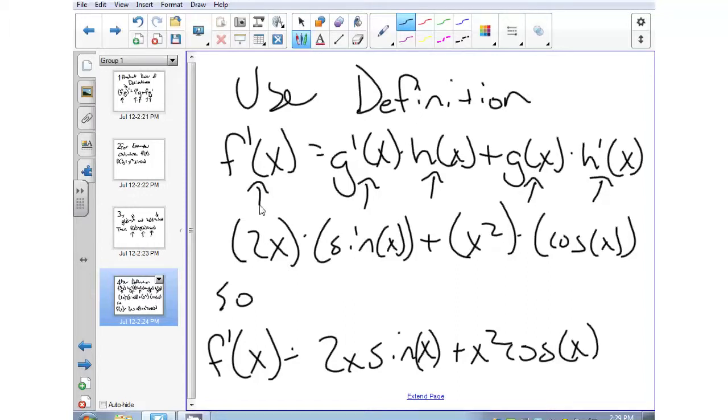So the derivative of g of x is 2x because g of x equals x squared, plus then we have to multiply by h of x which is just sine of x.